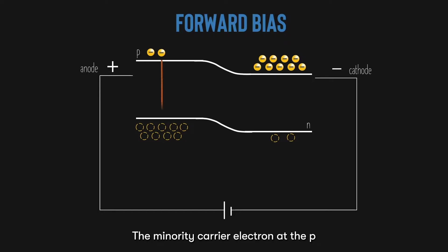The minority carrier electron at the P side is bound to recombine with the hole. This process is called recombination. Recombination always leads to current flow. And I'll tell you why. After recombination, there is some sort of charge imbalance at the P side. And the P side will tend to kick out an electron into the anode, into the external circuit.